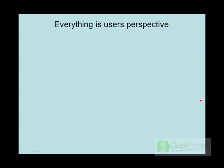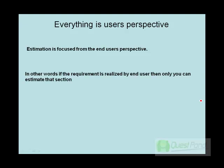Everything is from the user's perspective — if the user does not see something, you cannot estimate it. Estimation is focused from the end user's perspective; that is the whole main theme of function point. In other words, if a requirement is realized by the end user, then only can you estimate that section. The best part is that because it is from the user's perspective, the customer gets a feeling that he will only pay for what he sees — you pay for what you see.